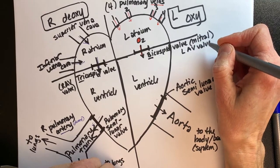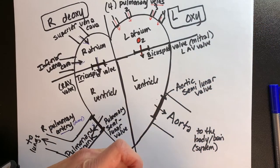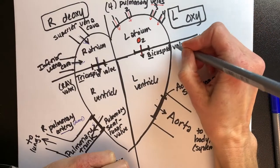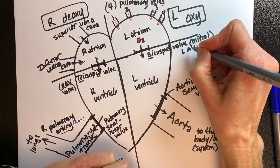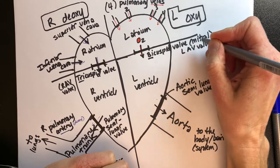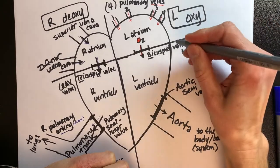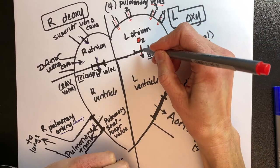You could also call it the mitral valve. You may have heard of mitral regurgitation, mitral stenosis, these kinds of things. But really the bicuspid valve is easier because you can look at it and identify it. You can also call it the left atrioventricular valve. We'll just call it bicuspid for now.